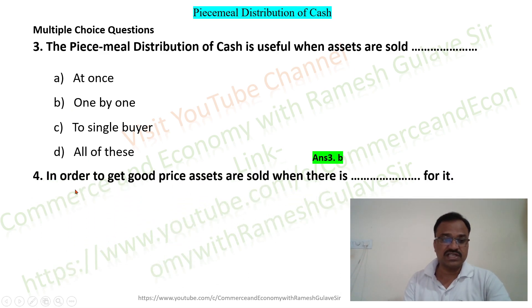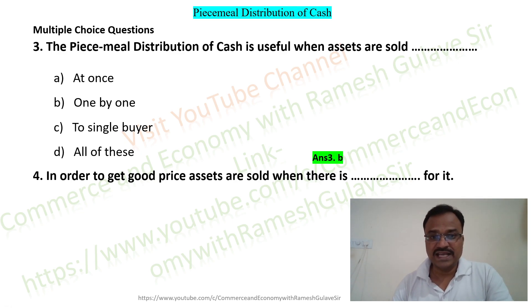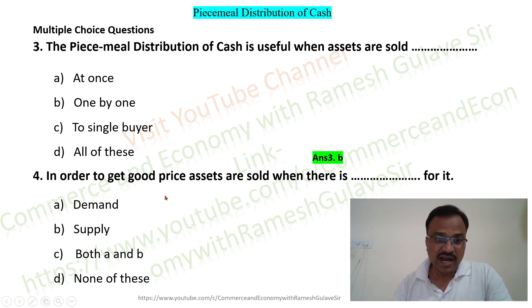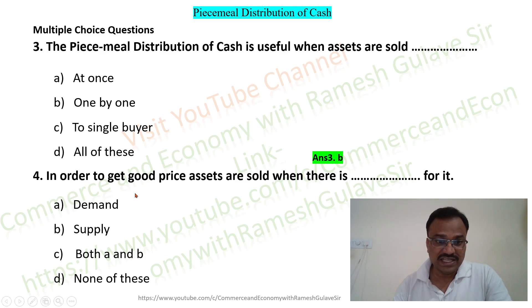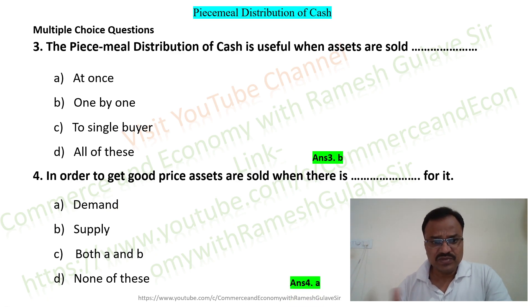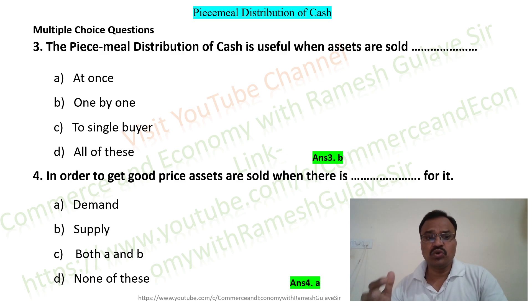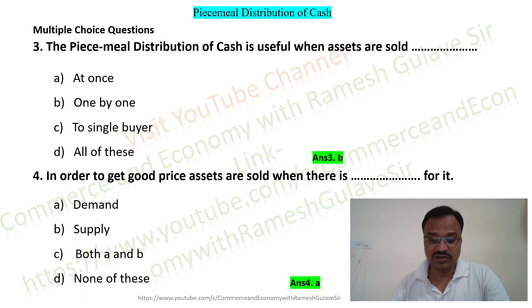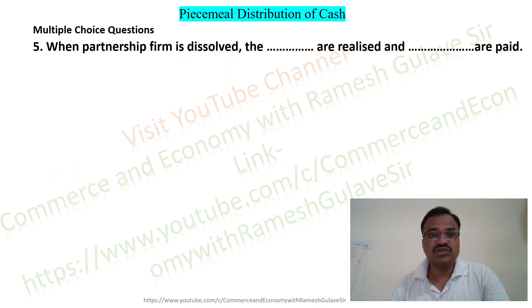Question 4: In order to get a good price, assets are sold when there is dash for it. Options are: demand, supply, both, none of these. In order to get a good price, we have to sell assets when there is demand for it, so option A is the right answer. In piecemeal distribution also, assets are sold when there is demand so the firm can get a good price.